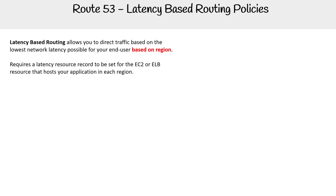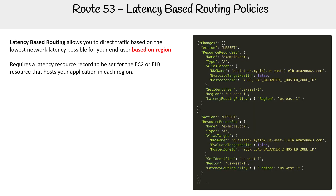Latency-based routing allows you to direct traffic based on the lowest network latency possible for your end user, based on region. Here is a more complex looking example — as you can see, that's a lot more code than the other ones. It requires a latency resource record to be set for something like EC2 or ELB that hosts your application in each region.